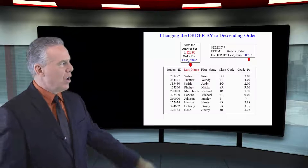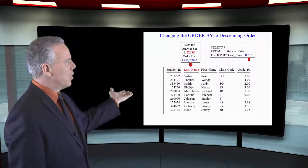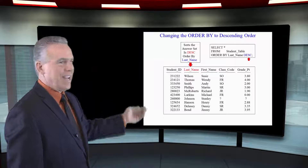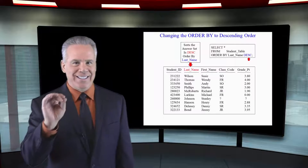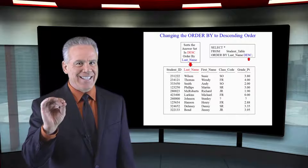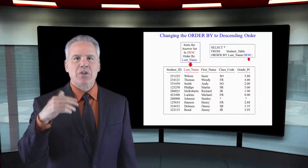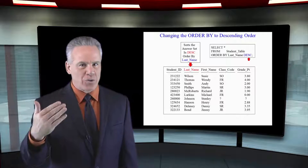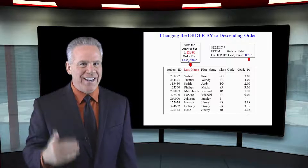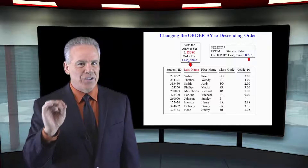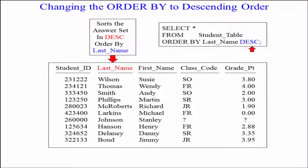Now take a look here — we're going to ORDER BY last name descending, D-E-S-C. It's going to be reverse order from Z to A. If you want descending, that's the way you put it. You can't spell out descending; it must be D-E-S-C.